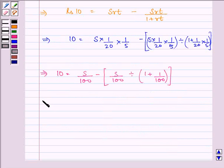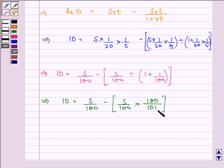So, simplifying it further, we have 10 is equal to S upon 100, minus S upon 100, into 100 upon 101. Further on solving, we find out that 10 is equal to S upon 100, minus S upon 101.